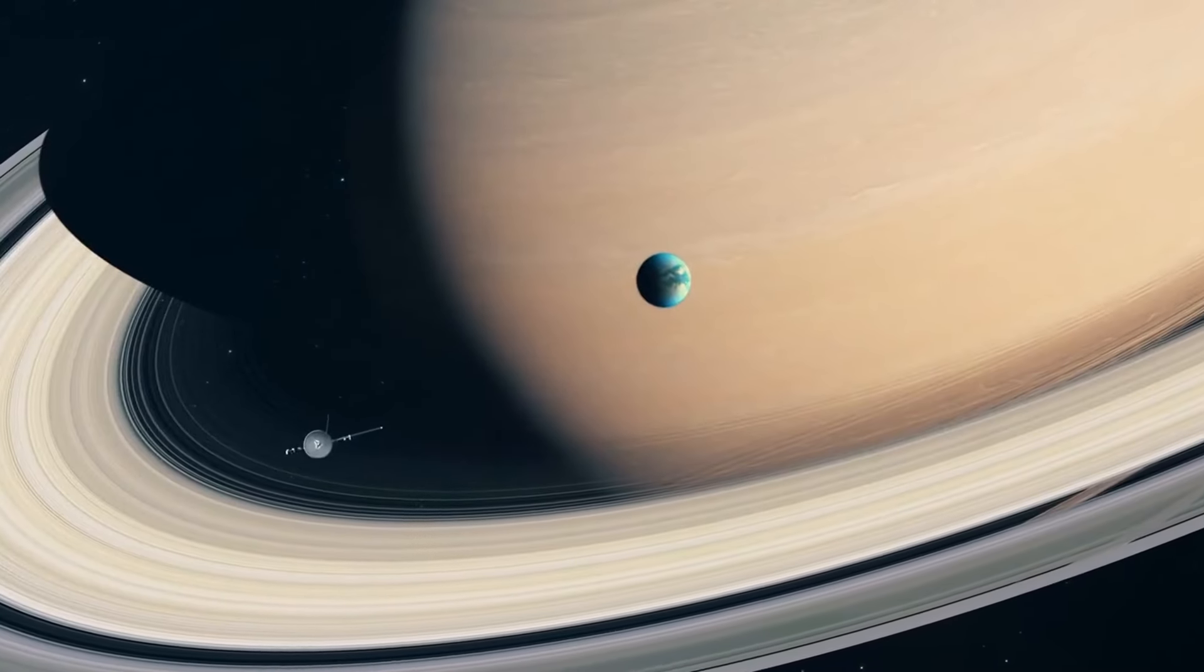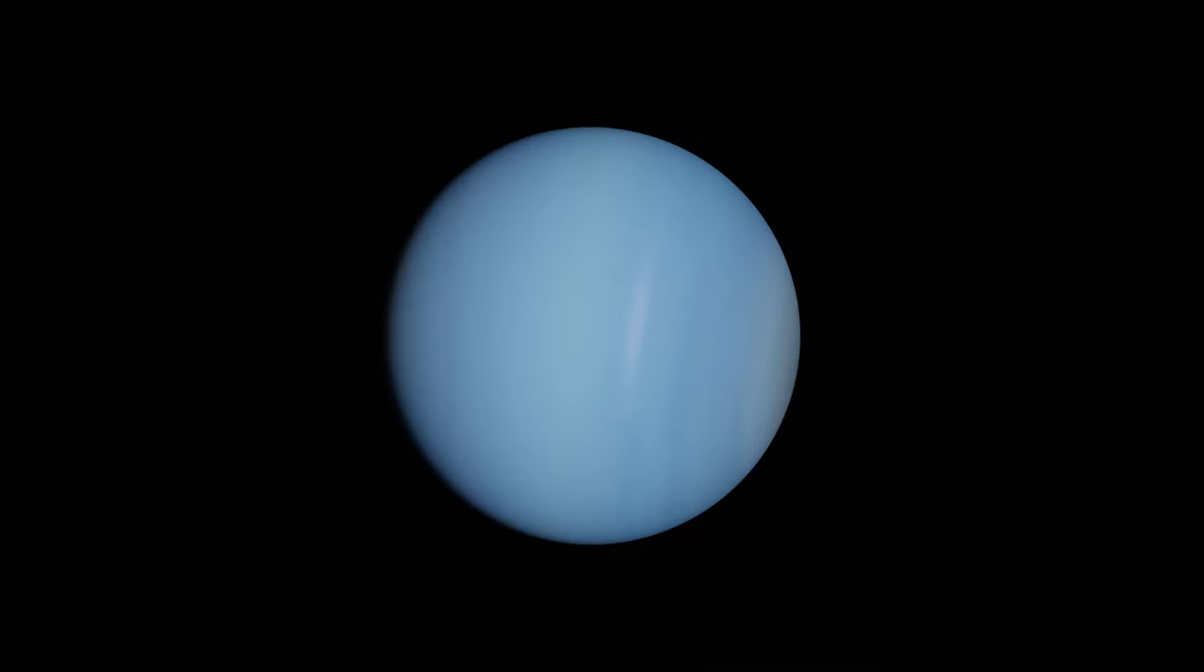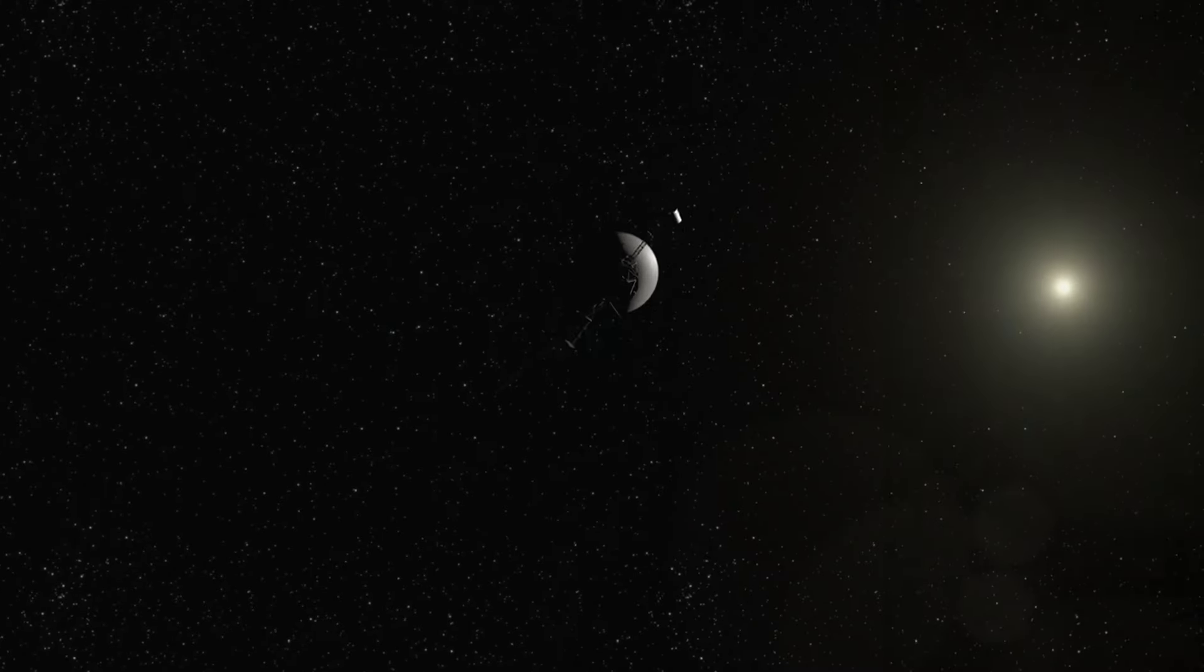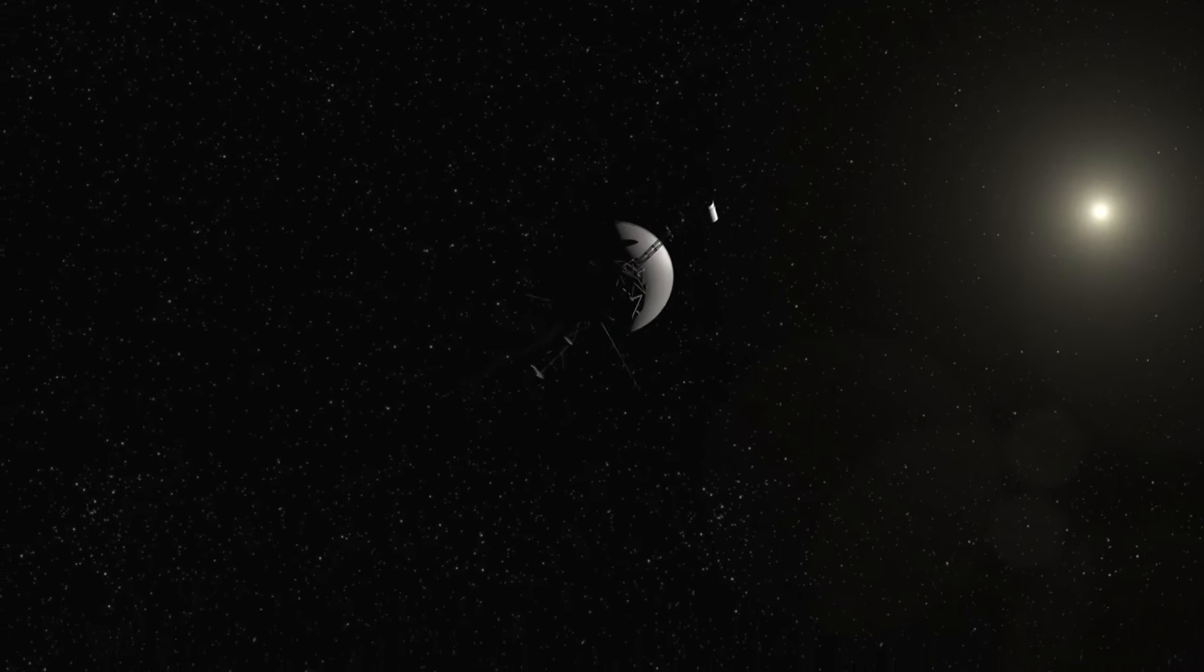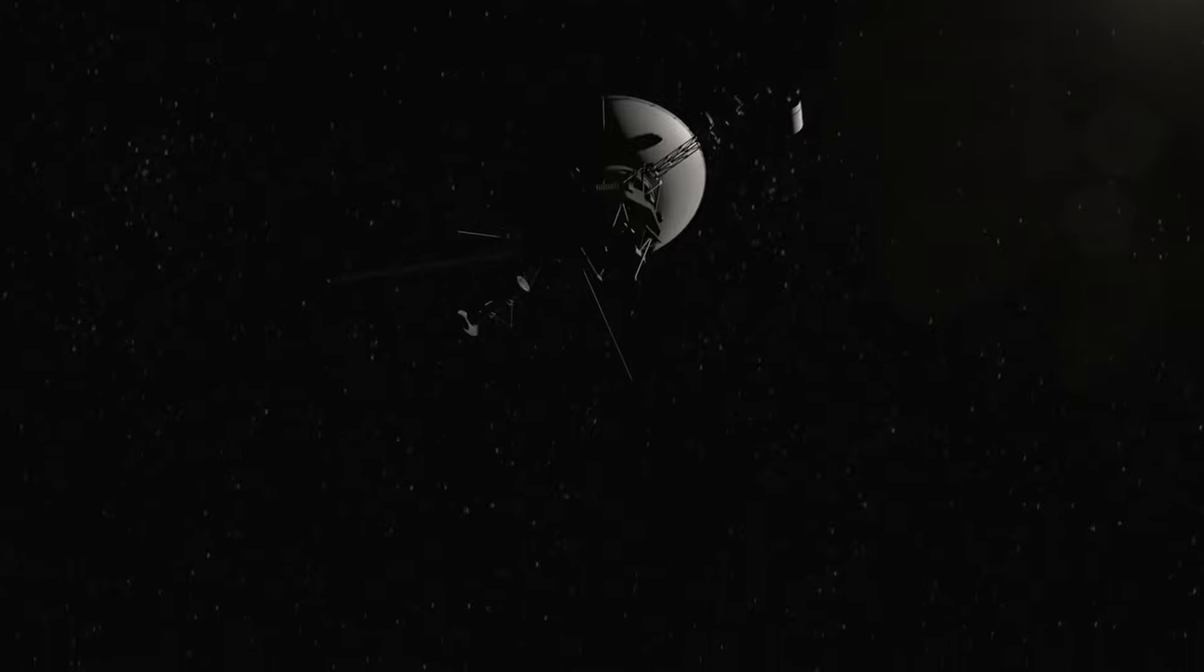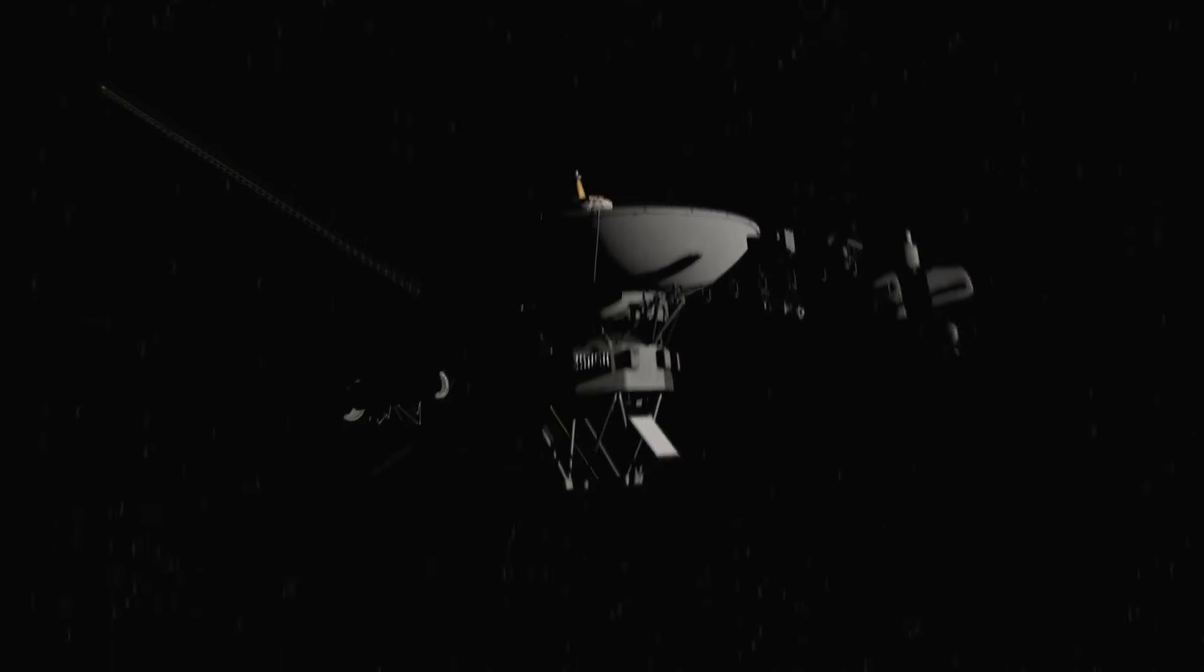But its journey didn't stop there. In 1990, Voyager 1 snapped the iconic solar system family photo from over 6 billion kilometers away, showcasing our celestial neighborhood like never before. And in 2012, it ventured into interstellar space, a historic moment marking humanity's reach beyond the stars.